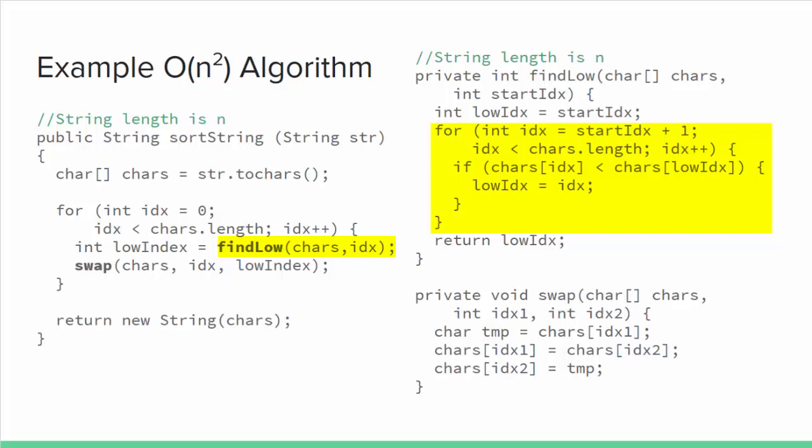FindLow is, therefore, itself a Big-O(n) algorithm. A Big-O(n) algorithm inside a Big-O(n) loop makes sort string a Big-O(n²) algorithm. The second method call inside sort string's loop is the swap method that always executes three statements. It's not affected by the length of the string, so it only adds a constant number of statements to the loop. The total order of the sort string method, then, is still Big-O(n²). This example illustrates that even though we didn't see an obvious nested loop in the sort string method, we still had another Big-O(n) loop inside the findLow method, and that caused the sort string method to be Big-O(n²).